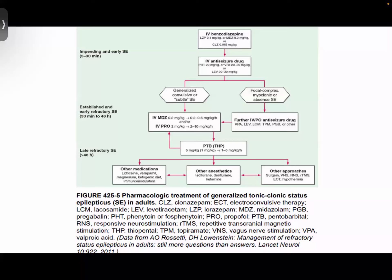Despite one IV benzodiazepine and one long-acting antiseizure medication, if the status epilepticus is still continuing, we can go for anesthetic medications and sedatives as infusions. For generalized convulsive status epilepticus, we can try IV midazolam as infusion at 0.2 mg per kg followed by 0.2 to 0.6 mg per kg per hour, and IV propofol at 2 mg per kg bolus, followed by 2 to 10 mg per kg per hour.